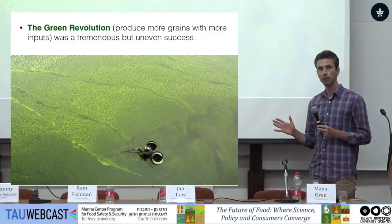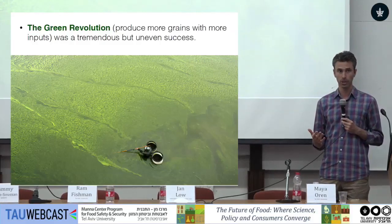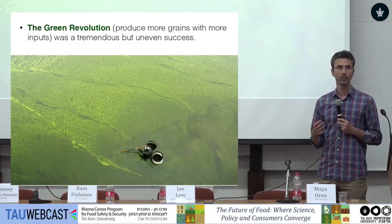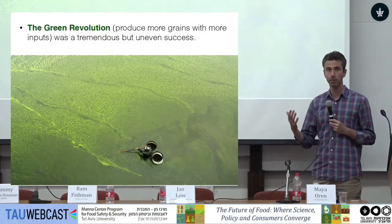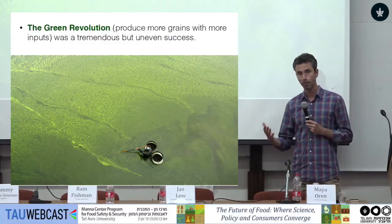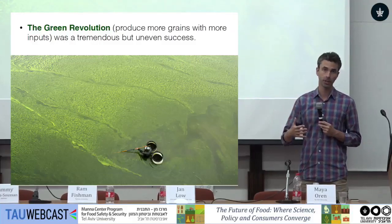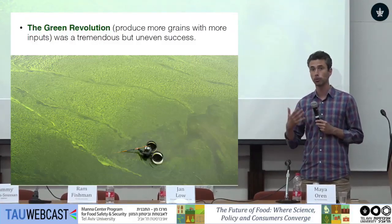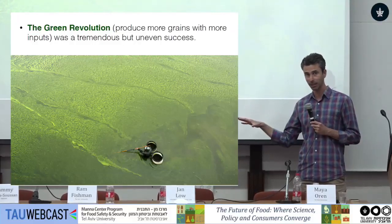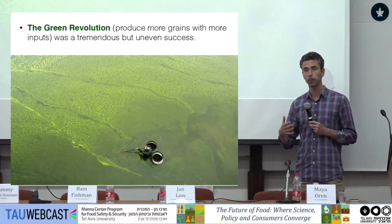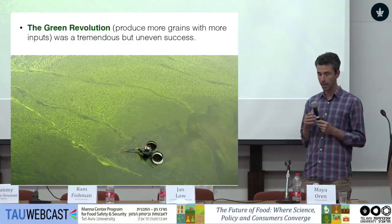Another issue with the Green Revolution is that in those areas which were successful, it often carried tremendous negative environmental impacts. The Green Revolution is a technology that enables farmers to produce more by using more inputs — more water, more pesticides, more fertilizers. Great success in producing more food, but the environmental impacts of this method of production, where it has succeeded, are getting more and more serious. We have evidence they are actually becoming a major public health issue in countries like India and China.